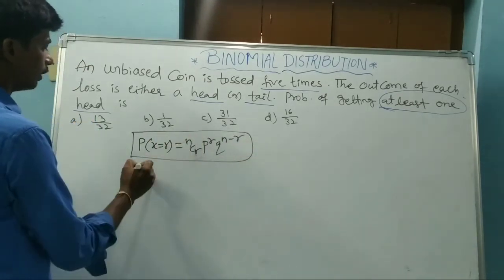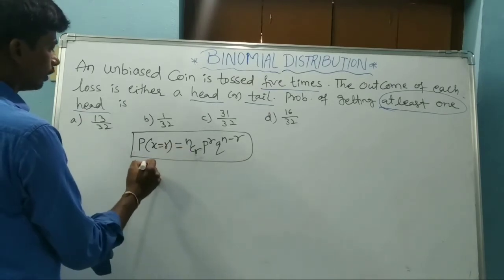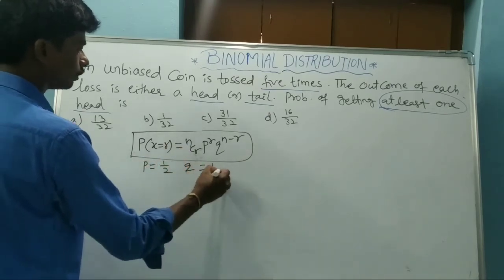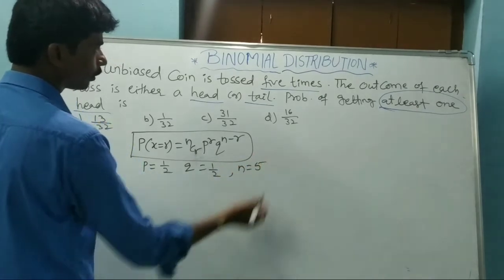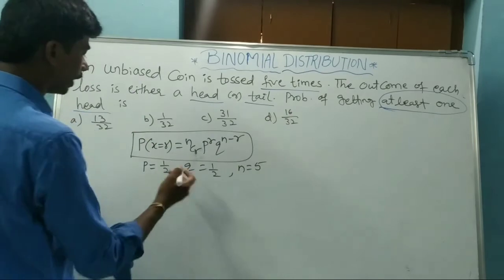What is that? P equal to one by two, Q equal to one by two, N equals five - five times.